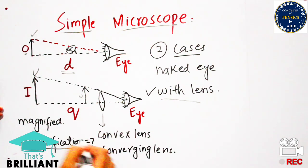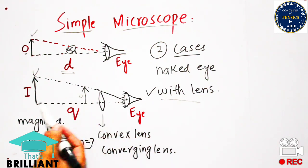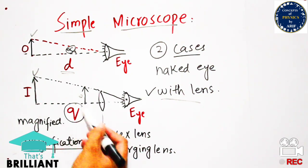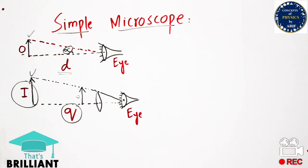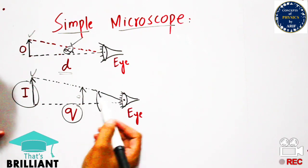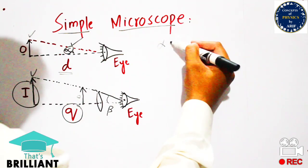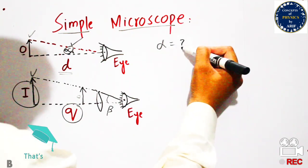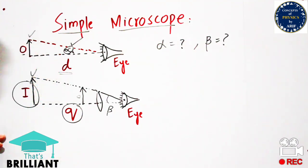We want to know how much magnification can be produced after placing the lens between the object and eye. To calculate the magnification, we first need to calculate angle alpha and angle beta. Angle alpha is very small, so it can be approximated as tan alpha, which simply equals alpha.